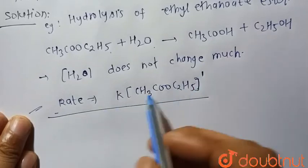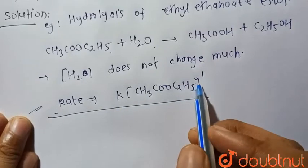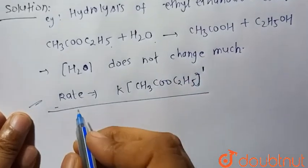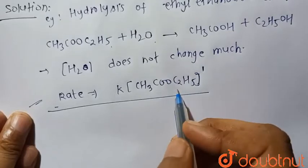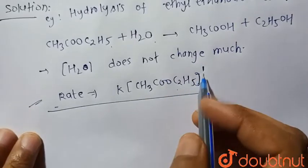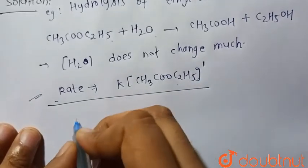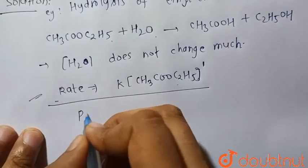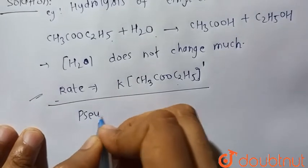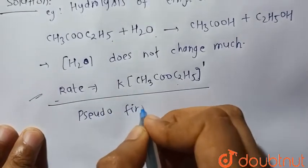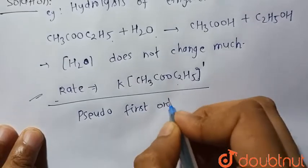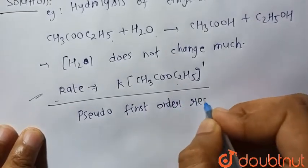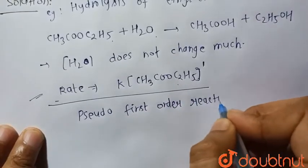So we can see here this is the first order reaction, because we know that order is the sum of the powers of the concentration of reactants in the rate expression. So we can see this is the pseudo first order reaction.